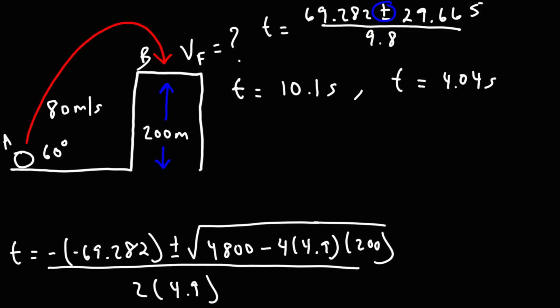Now you might be wondering, which time value should we use? Now keep in mind, there are two points in this trajectory that has a height of 200. This point here, point B, and a new point that we could define, point C. At both of these points, Y final is 200. So that's why we have two different time values. At point C, the time it takes to get to this point, that's going to be the first time value, or the smaller of the two. So that's 4.04 seconds. The second one is going to be the larger time value, so that's going to be 10.1 seconds.